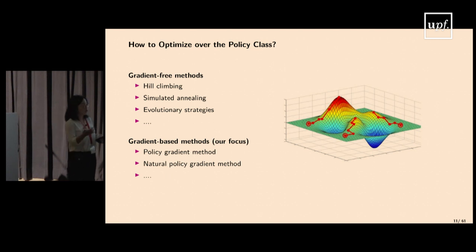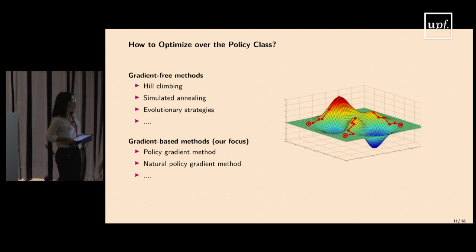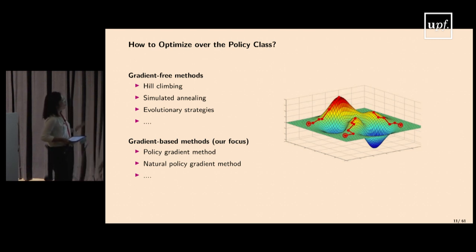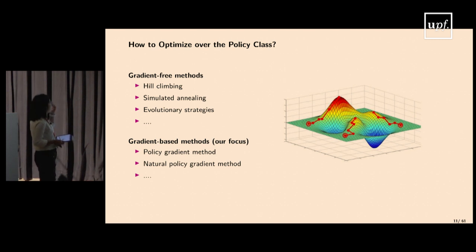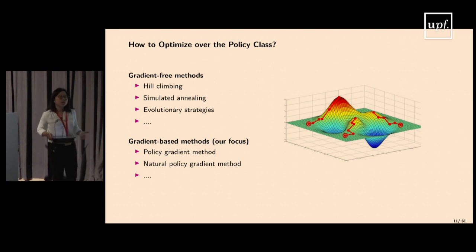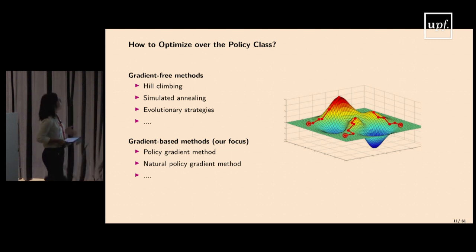How do we optimize a non-concave objective over the parameter or policy space? Gradient-free methods like hill climbing and simulated annealing use only zero-order information. However, for reinforcement learning it turns out that computing gradients is not a luxury — you can often do so efficiently. That's why gradient-based methods are particularly popular and will be our focus for this lecture, covering policy gradient and natural policy gradient methods.